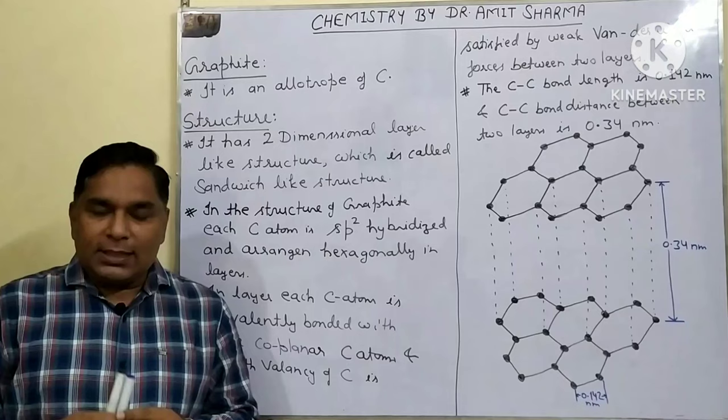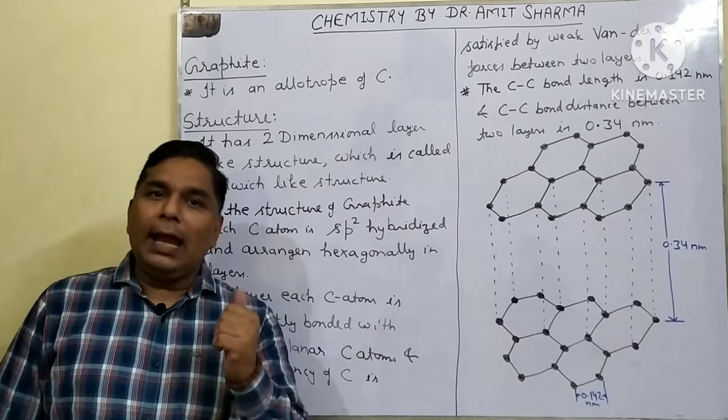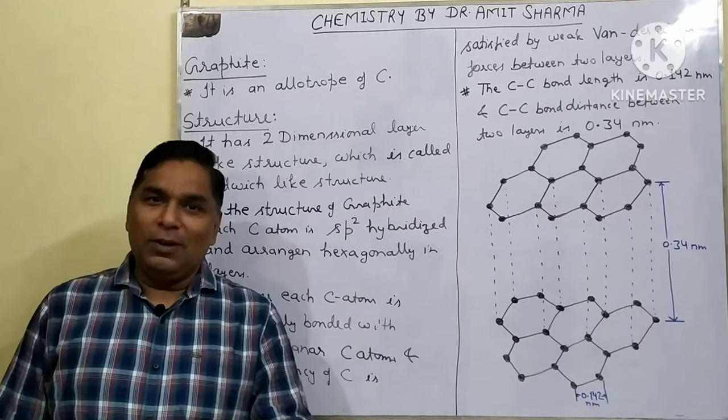A short note question commonly asked is: write the structure, properties, and applications of graphite. So let us start — graphite is an allotrope of carbon.